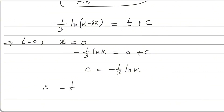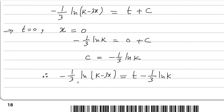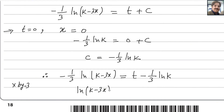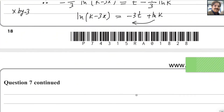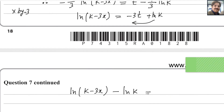Therefore we can write: minus 1/3 ln(k minus 3x) = t minus 1/3 ln(k). To eliminate the fractions, multiply both sides by minus 3. This gives: ln(k minus 3x) = minus 3t plus ln(k). Moving the log terms together: ln(k minus 3x) minus ln(k) = minus 3t.